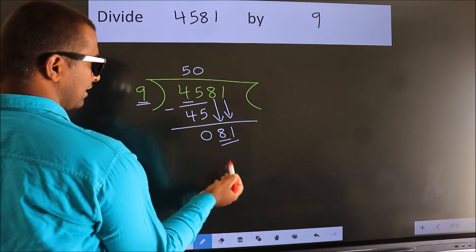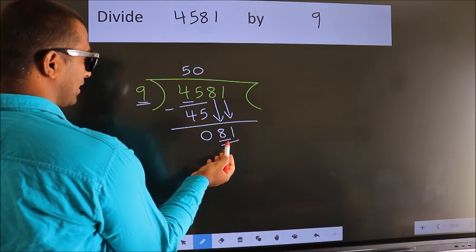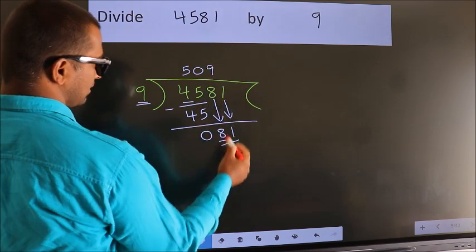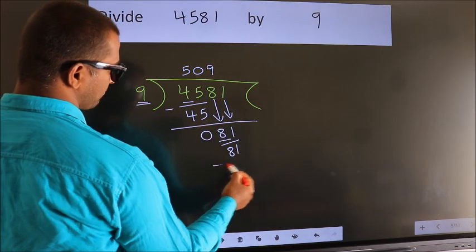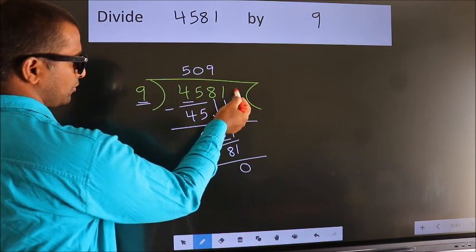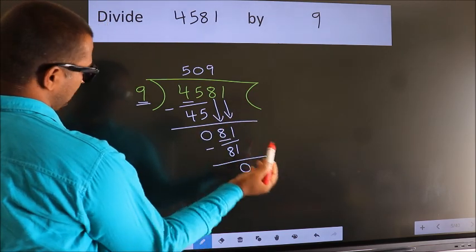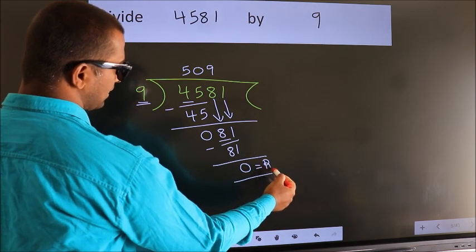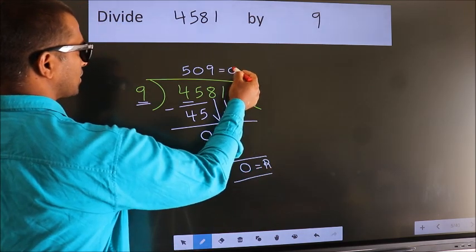So 81. When do we get 81? In 9 table. 9 nines, 81. Now we subtract. We get 0. No more numbers to bring it down. So we stop here. This is our remainder. This is our quotient.